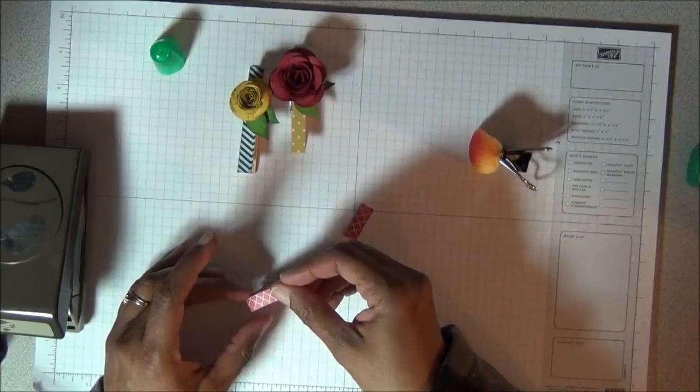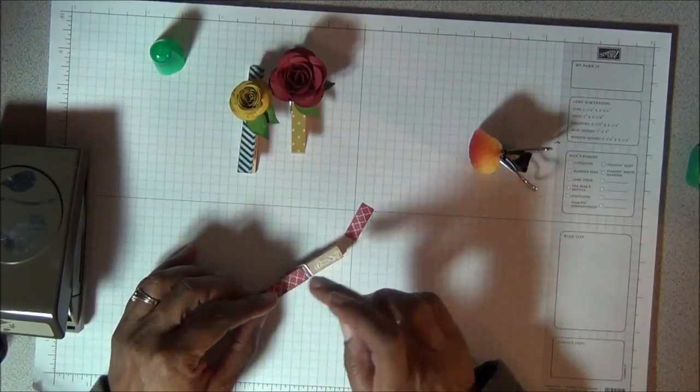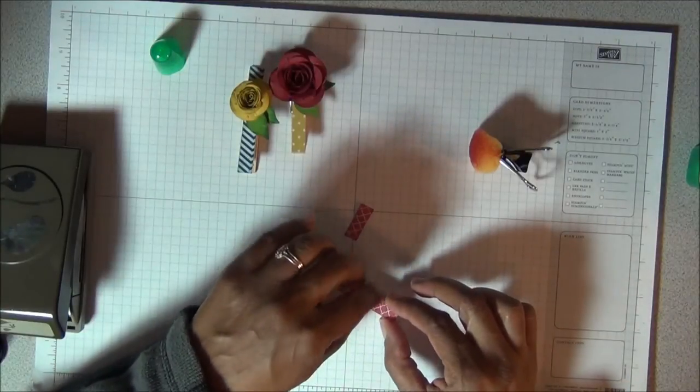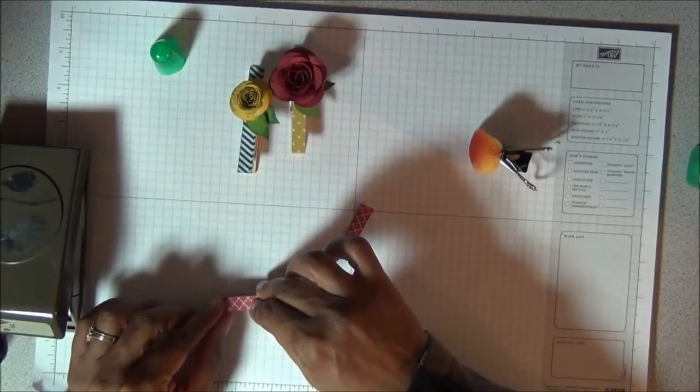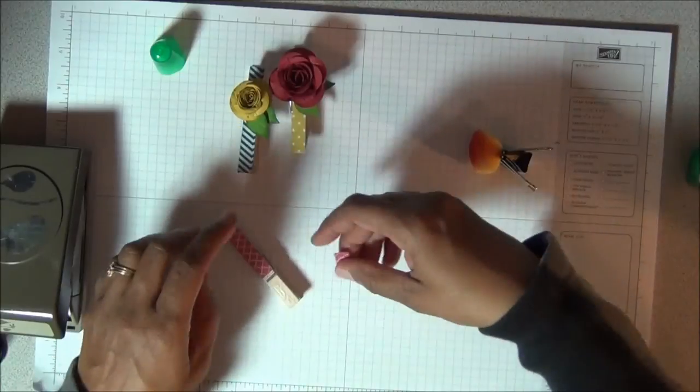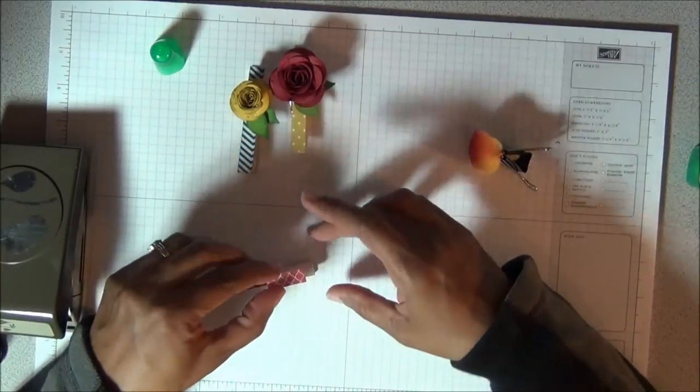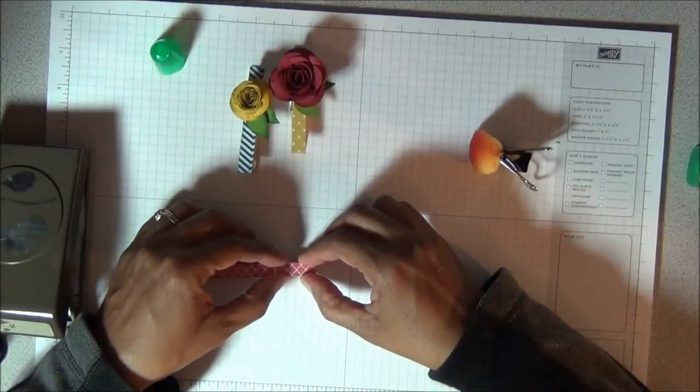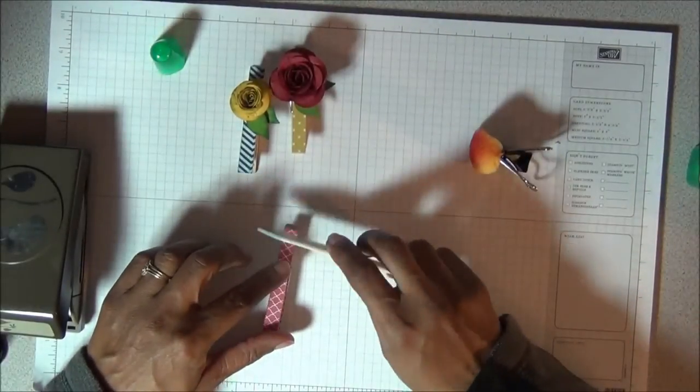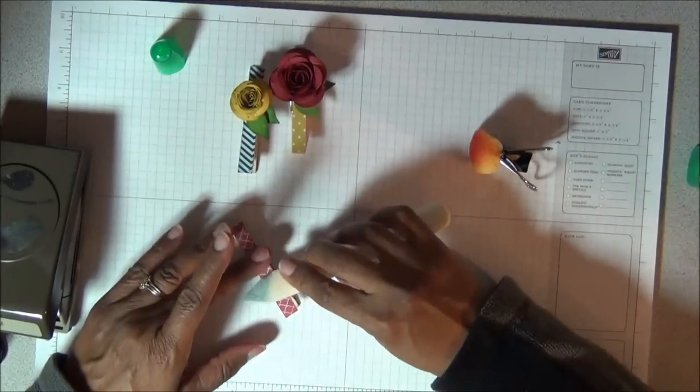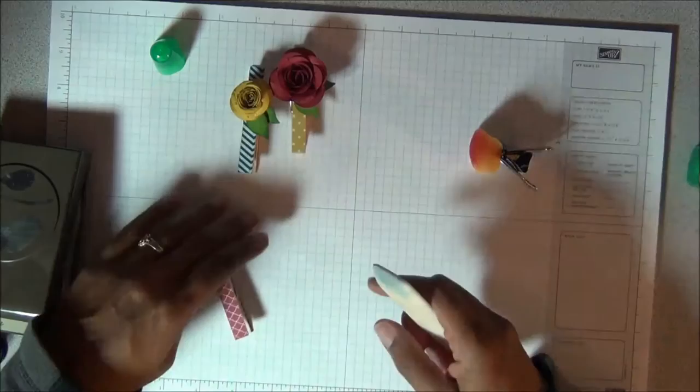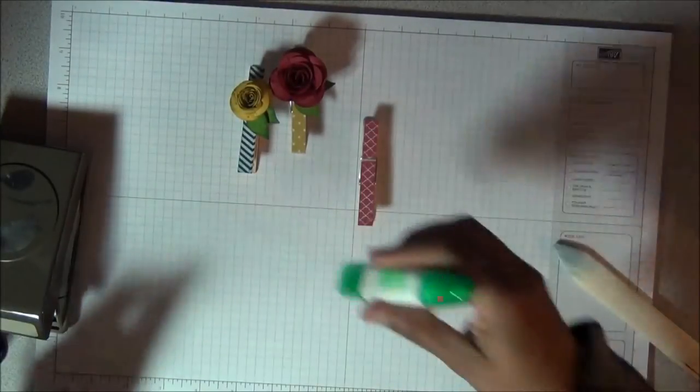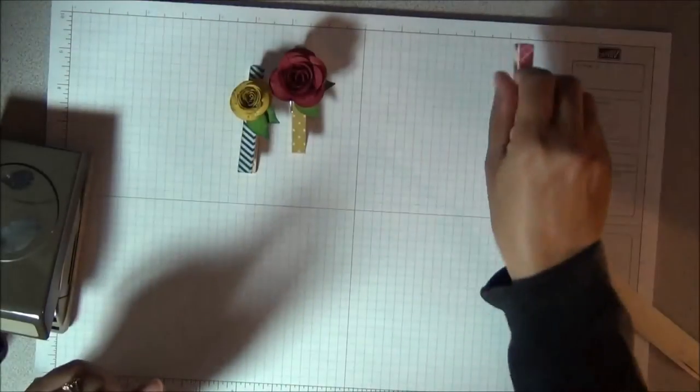The other thing you can do is get your bone folder or a squeegee. They sell them at Pampered Chef, and you may also have something like that if you have a Cricut. After you let it dry just a little, you might want to just kind of go over it and make sure it's smooth and flatten the glue edge to edge. Now I want to show you the leaves.